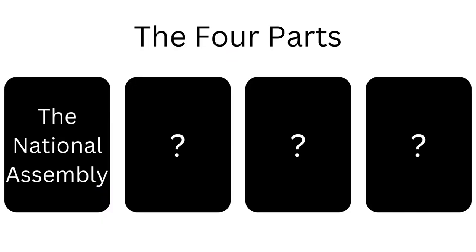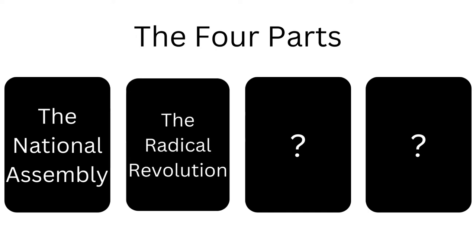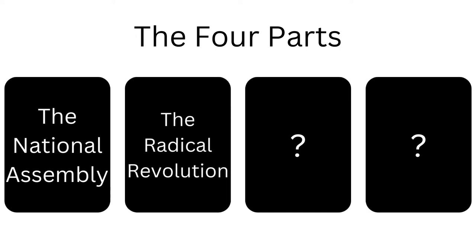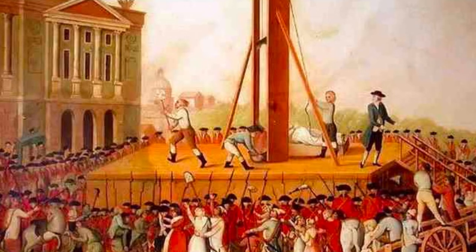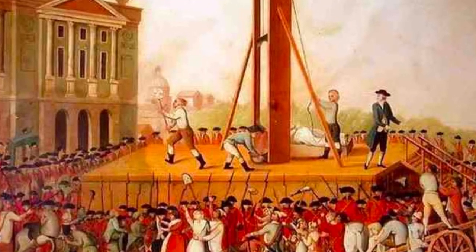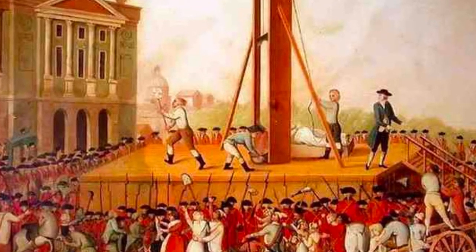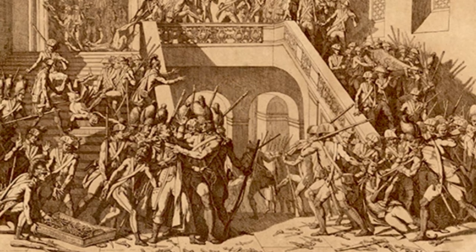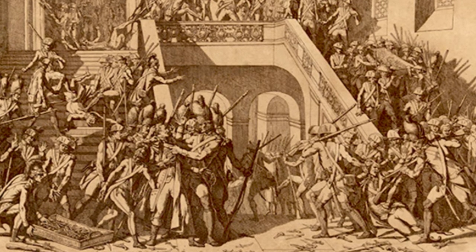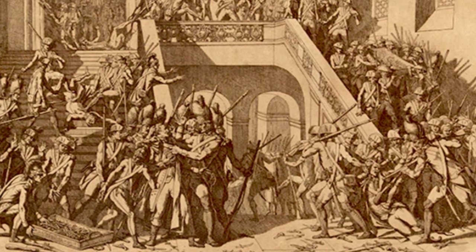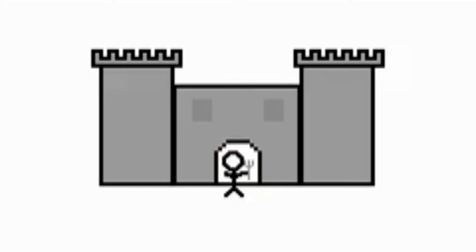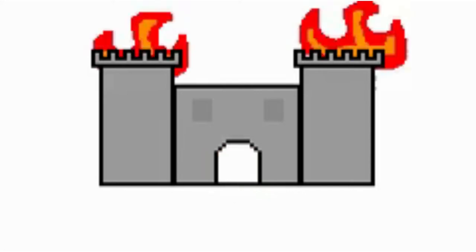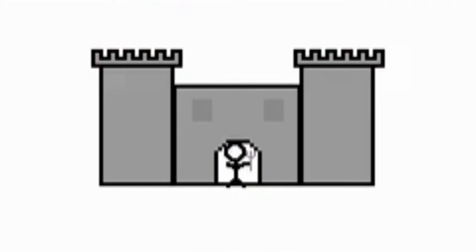The second part of the revolution was the Radical Revolution, which took place between 1792 and 1794. The commoners of France revolted against the old monarchy. They stormed the Bastille Fortress, marking the beginning of the war and the end of the old monarchy.